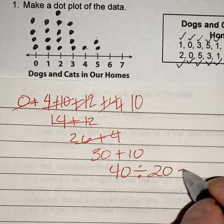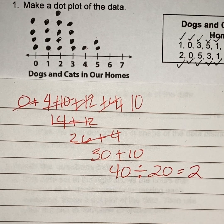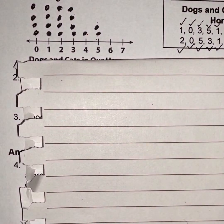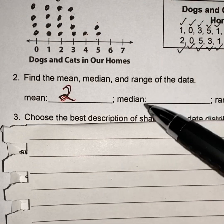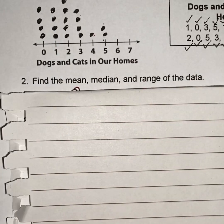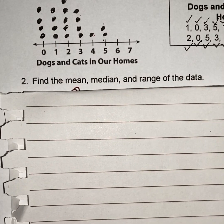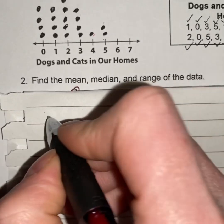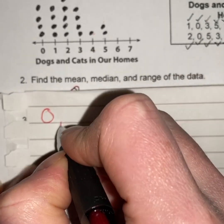So forty divided by twenty equals two. So my mean is two. Now I have to find my median. In order to do that, I have to list all of these numbers. I'm going to do it this way, there's another way, but I'm going to list all of these numbers. So I have four zeros, so one, two, three, four. Four ones, one, two, three, four.